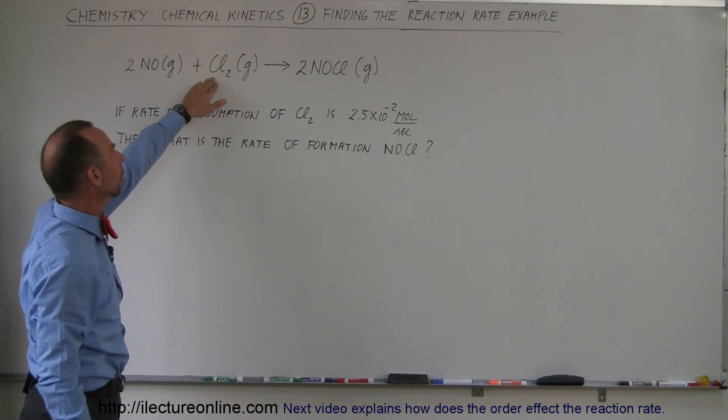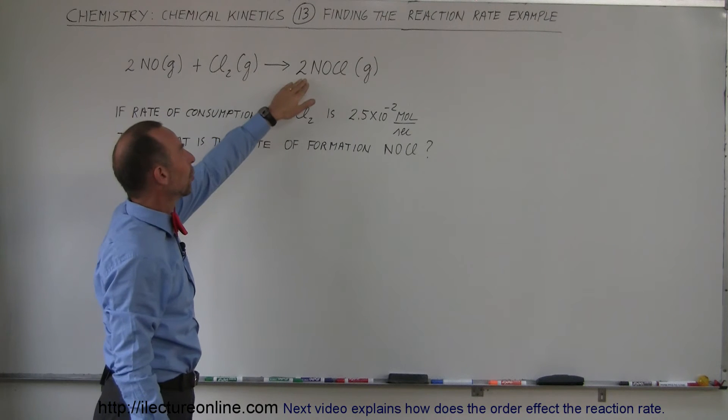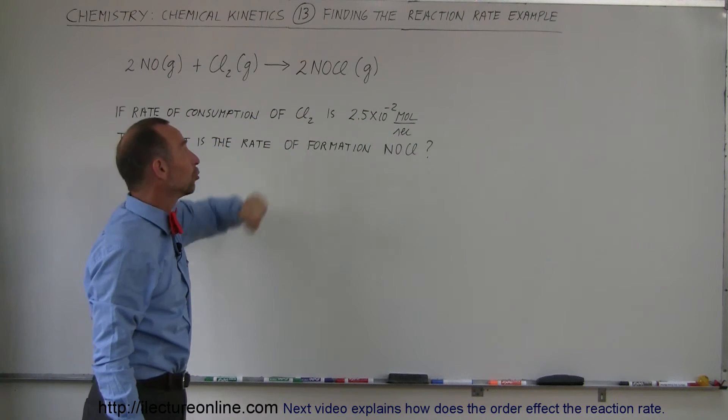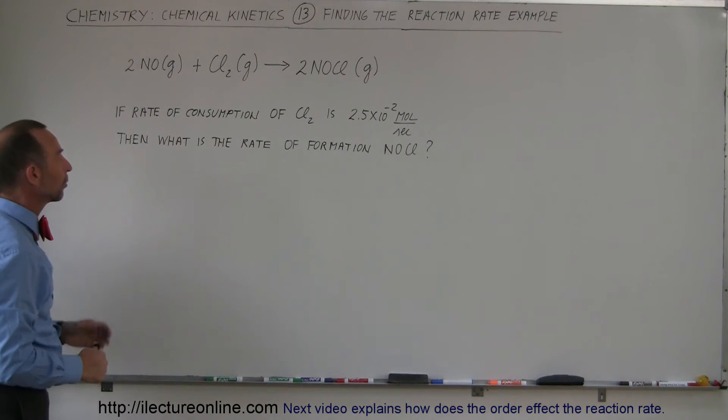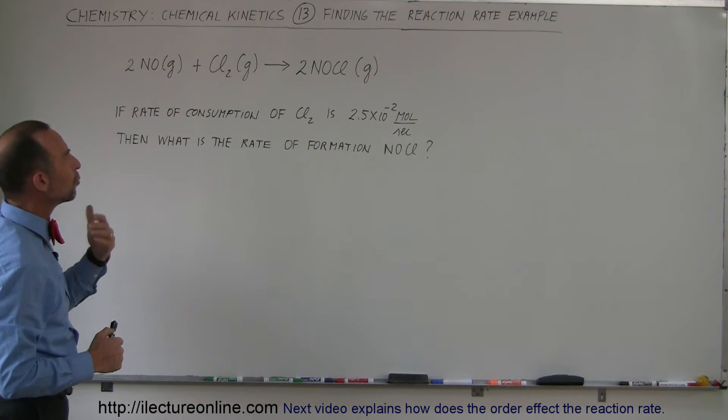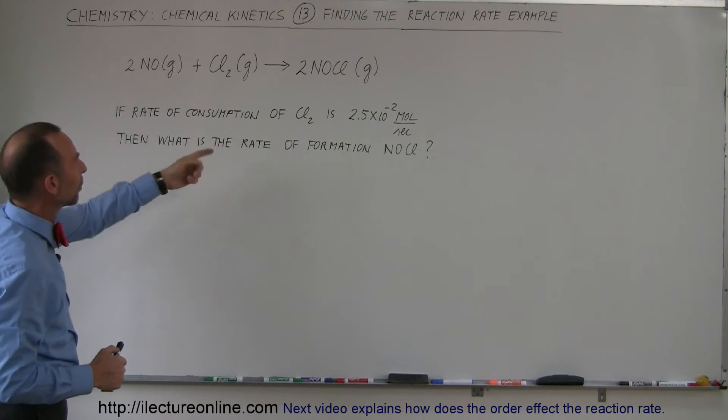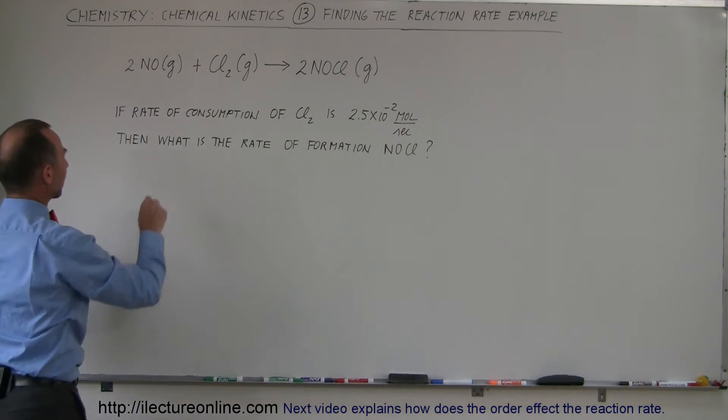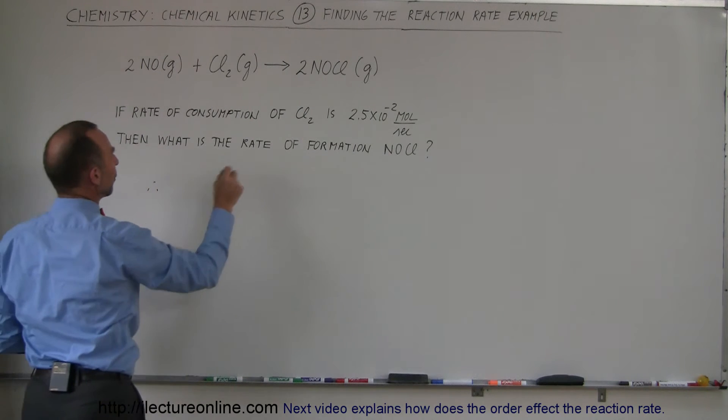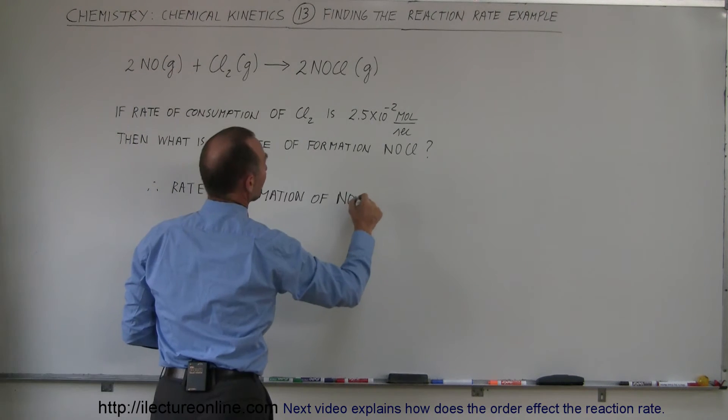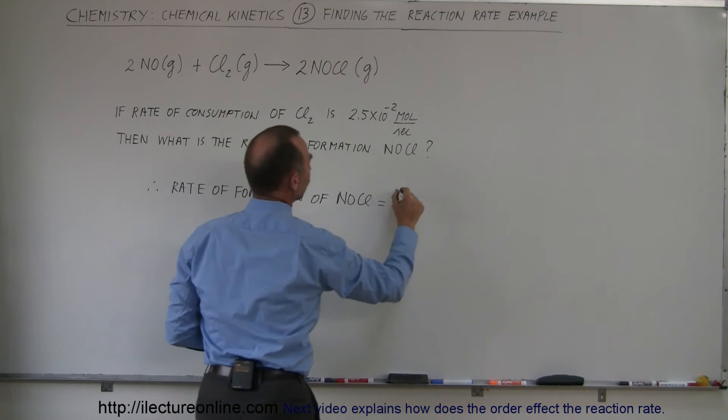For every 1 mole consumed of chlorine gas, we will produce 2 moles of nitrosyl chloride. So therefore, that means that the rate of production will be twice the rate of consumption.